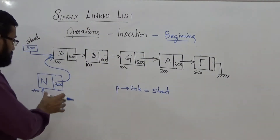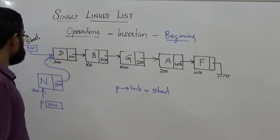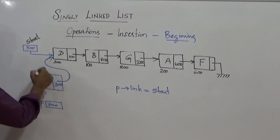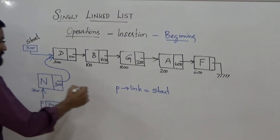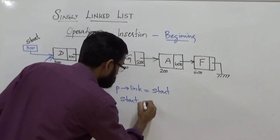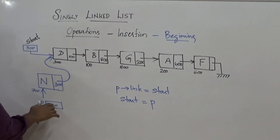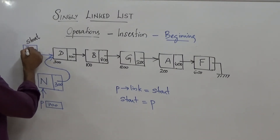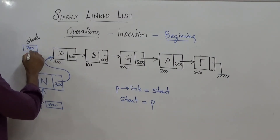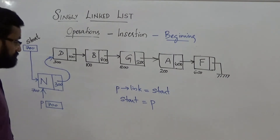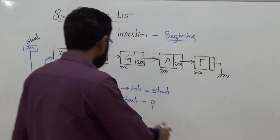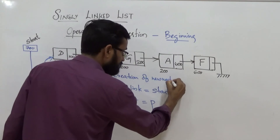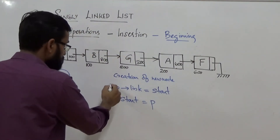Next, you have to make the new node the starting node. In order to shift the start pointer to the new node, you just need to perform the assignment start = P. Through this assignment, the base address of the new node gets stored in the pointer start, so that start now points to the new node. So the steps are: creation of new node, followed by these two assignments.